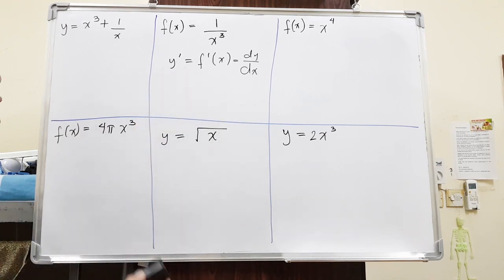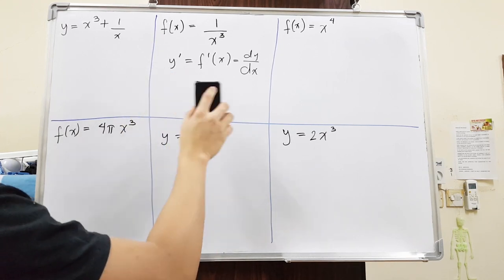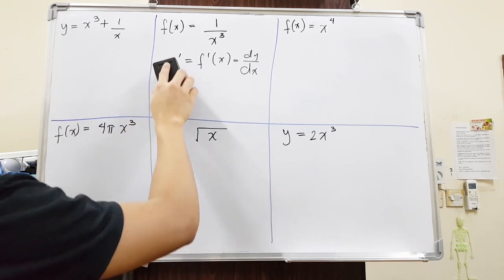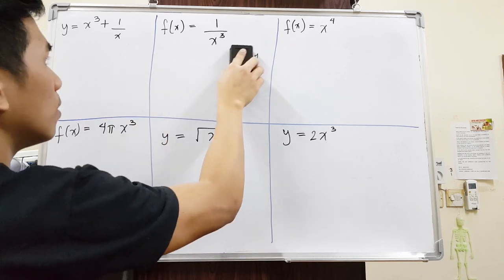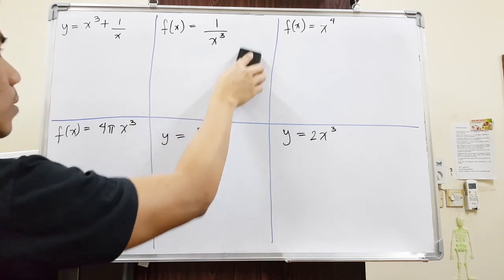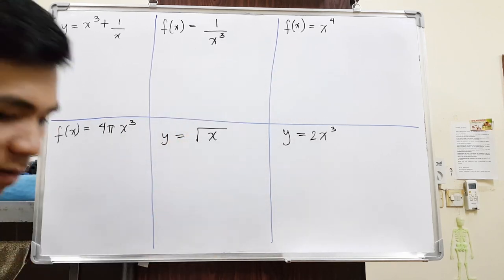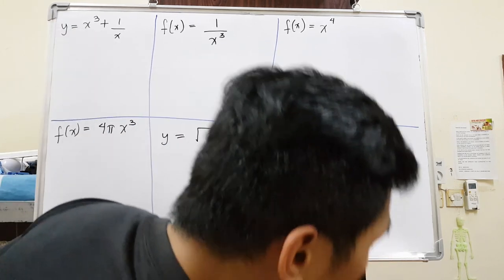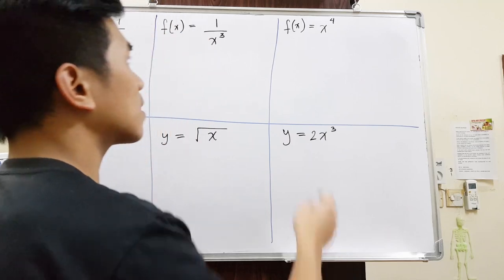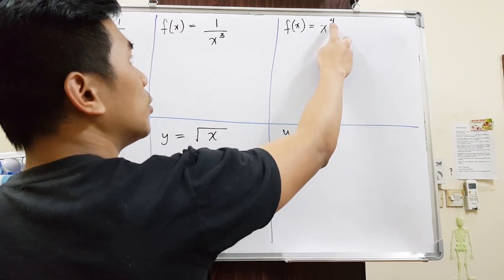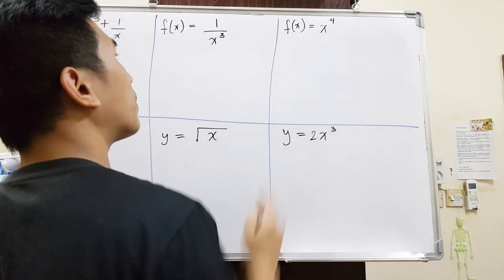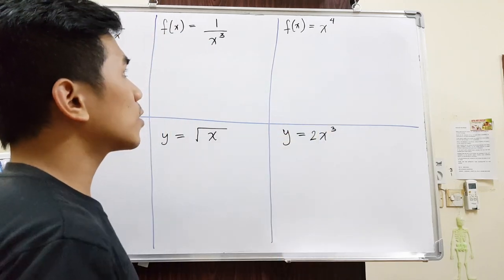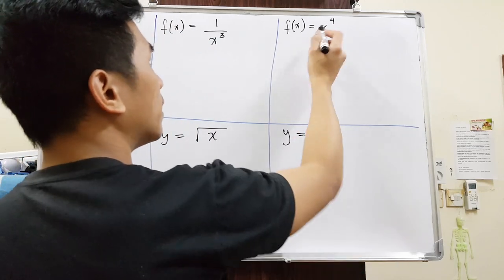There are more complicated derivatives, but you will start with the power rule. When you say power rule, by the name itself, we are going to derive this using their power.